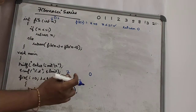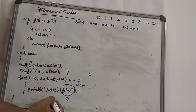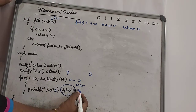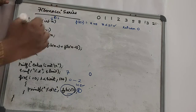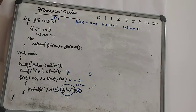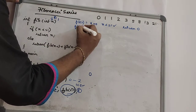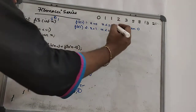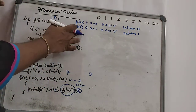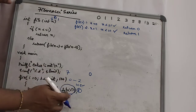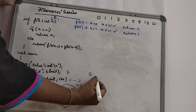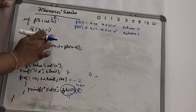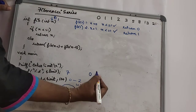Loop increments, i becomes 1. 1 is less than 7, so the second function call is made: fib(1). Inside, n is 1. n is less than or equal to 1, condition is true, so we return n which is 1. fib(1) returns 1. We have now printed 0 and 1.